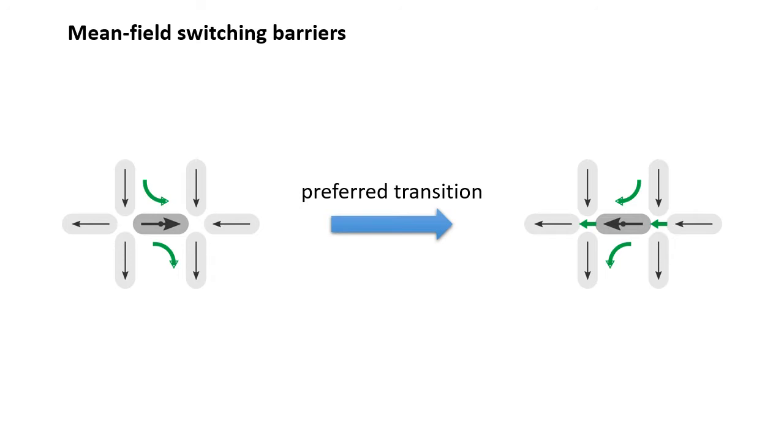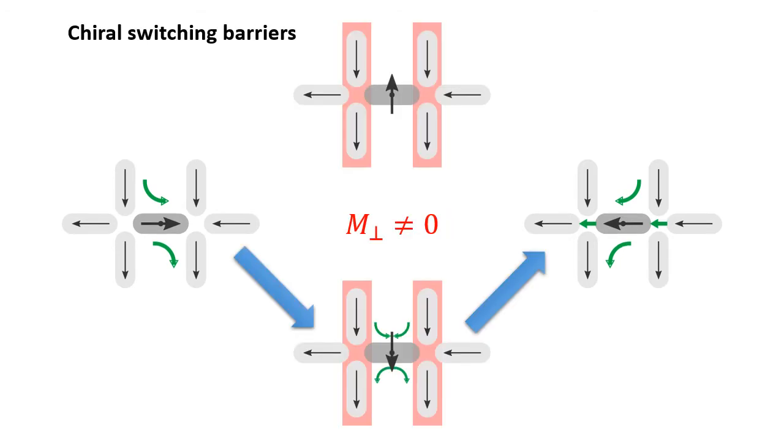In a commonly used approximation, the reversal barrier energy is assumed to depend only on the energy difference of the equilibrium configurations. The mean field model overlooks a crucial point, however, as clockwise and counterclockwise moment rotations can have different barrier energies.